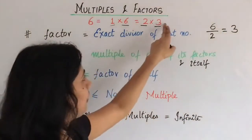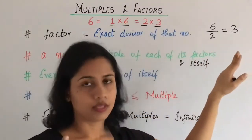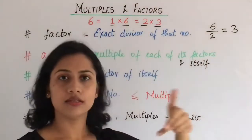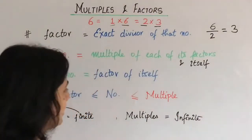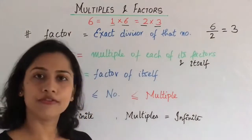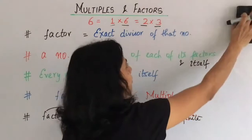Therefore, we can see for any other factor, 3 ko bhi hum likh sakti hai. 6 divided by 3 is 2. Ye bhi proper division ho raha hai. 6 divided by 6 is 1, 6 divided by 1 is 6 obviously. So, what we can say is that every factor is an exact divisor of that particular number.